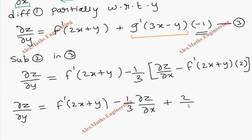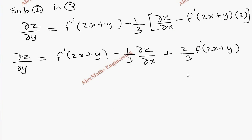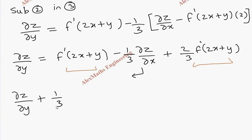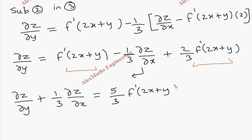Plus 2 by 3 f′(2x + y). Now we group the like terms. The two f′ terms combine, giving ∂z/∂y plus 1 by 3 · ∂z/∂x equal to 5 by 3 · f′(2x + y). Let's keep this as the fourth expression.